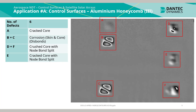B and C were corrosion damage between the skin and the core. D and F were crushed cores within the honeycomb core, also entailing node bond splits. And finally E was a cracked core with a node bond split as well.